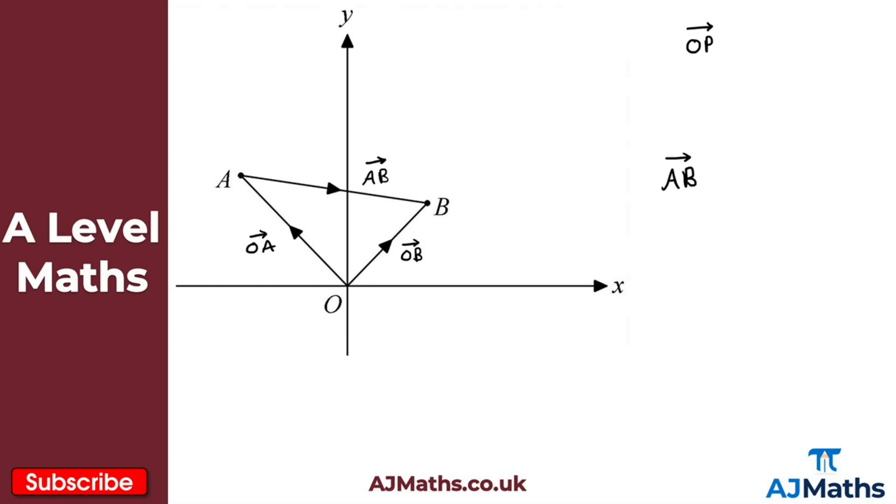If we're going in the opposite direction, then we need to subtract that vector. In that case, that would be minus OA, and then we're going up this vector here, the vector OB, so we just add that. It's going to be plus OB.